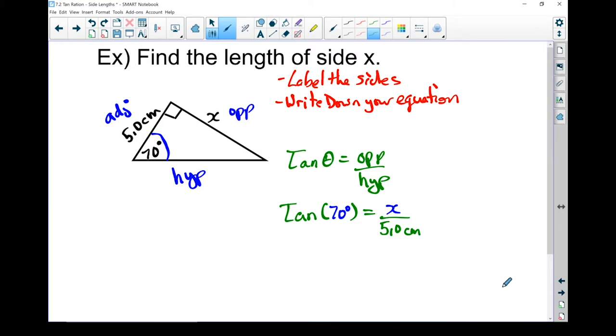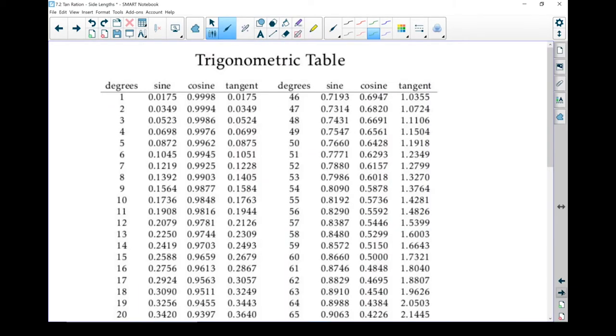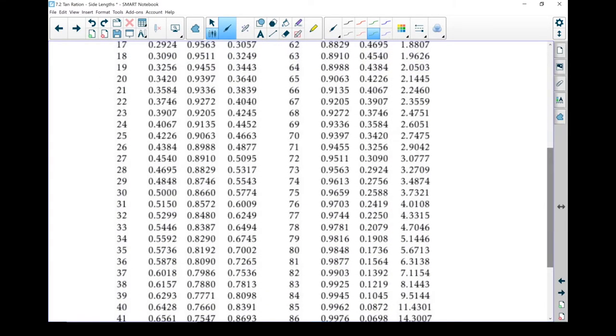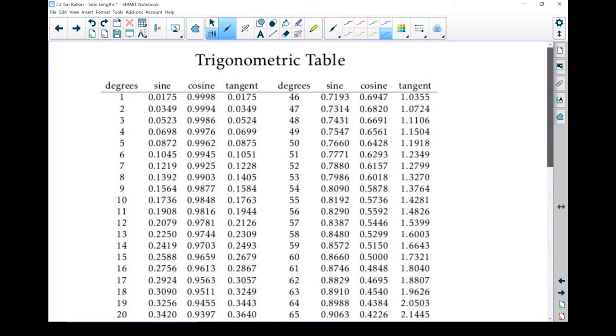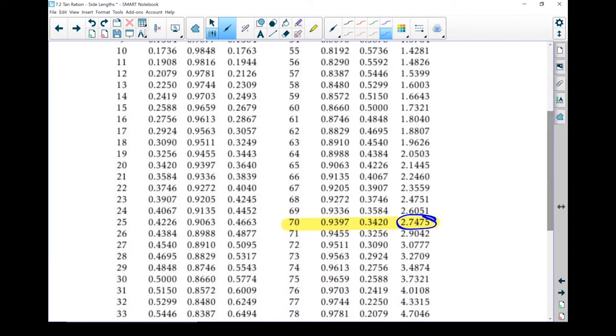Now right now we're looking, we have the angle and we want to know what the ratio is. The two ways you can do it, you can pull out your trig tables and I'm going to look for the 70 degrees. I'm going to have to scroll down. There we are. There's my 70 degrees. And I know my far right one is actually my tangent column. Let's scroll up. Yep, far right one is my tangent column.